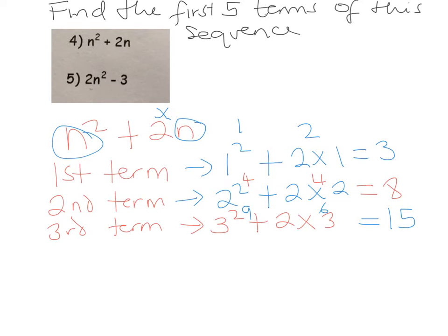Sorry about the mess, people. My handwriting is not the very best. For the fourth term, I'm going to leave a little bit of a gap so you can see what I'm writing. It's going to be 4 squared plus 2 times 4. 4 squared is 16, 2 times 4 is 8, 16 plus 8 is 24.